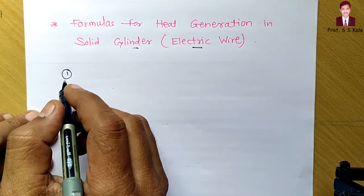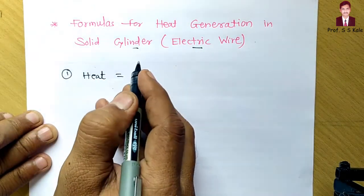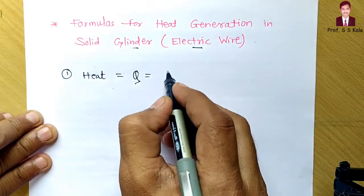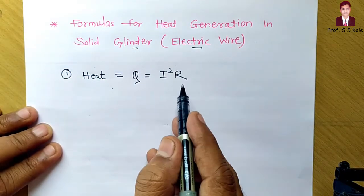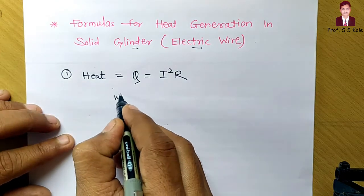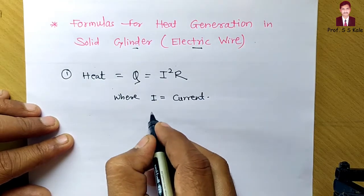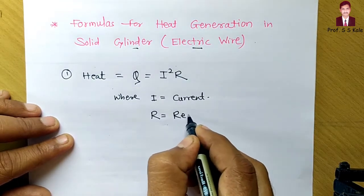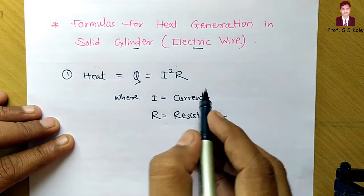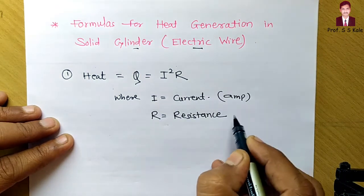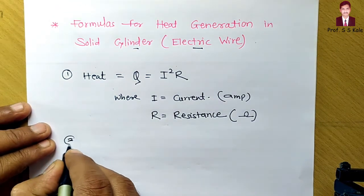The first formula is heat transfer, written as Q is equal to I squared R. That's the electrical formula where I is current, measured in ampere, and R is resistance, measured in ohm.